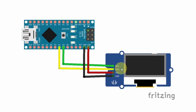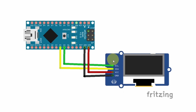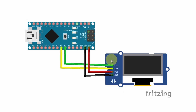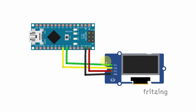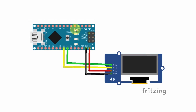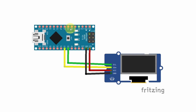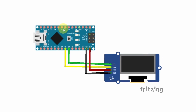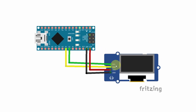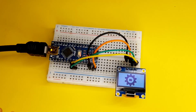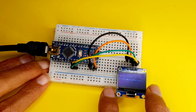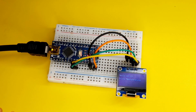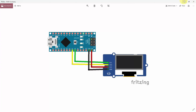Some OLED displays come with another pin called the Reset pin. You may need to connect it to one of the digital pins, like pin number 5. For me, it doesn't come with this fifth pin. Once you have connected the OLED display, we can move on to the Arduino IDE.